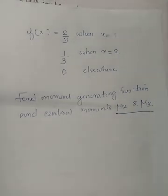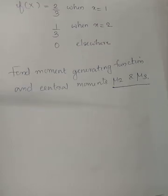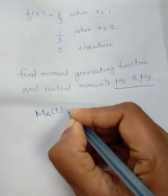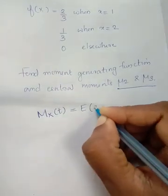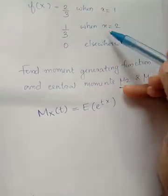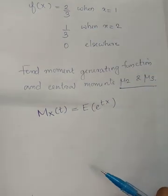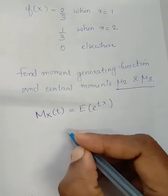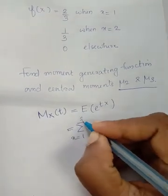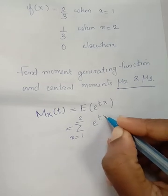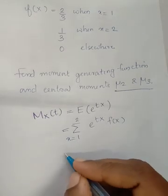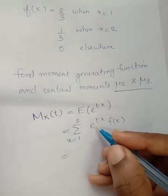Let's move on. First, we write the moment generating function. M_X(t) is defined as the expectation of e raised to tx. This is the discrete case where x takes values 1 and 2. The formula is the summation from x equals 1 to 2 of e raised to tx times f(x).